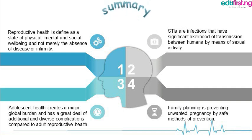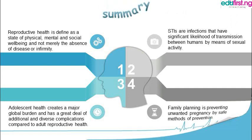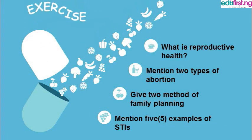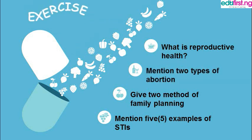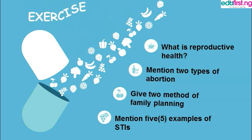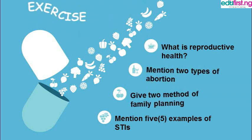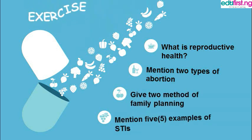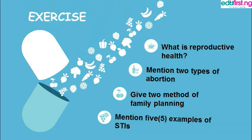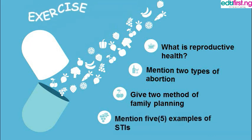I hope you've learned a few things regarding reproductive health. Here are your home exercises: What is reproductive health? Mention two types of abortion. Give two methods of family planning. Mention five examples of STIs. We've covered these in this class, and I hope to see you in the next class.